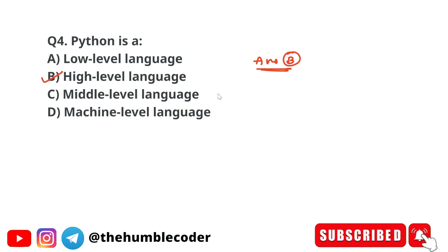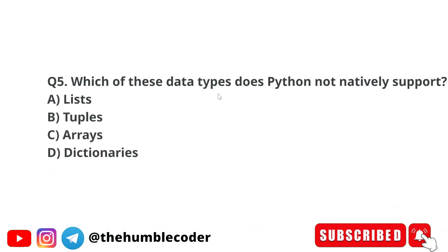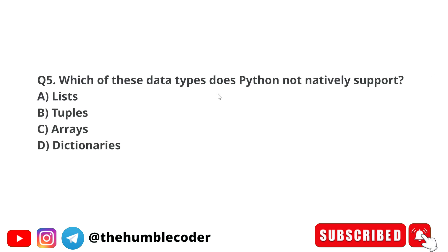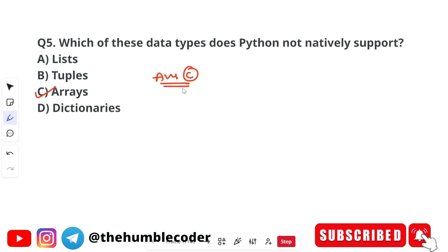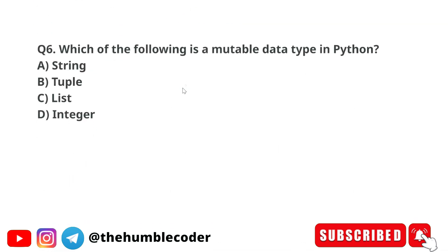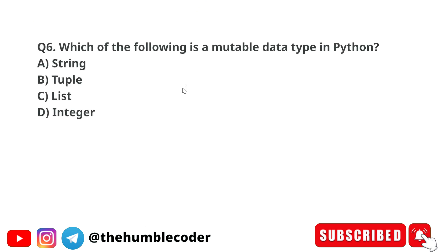Next question: which data type does Python not natively support? The options are lists, tuples, arrays, and dictionaries. The correct answer is option C, which is arrays. Arrays are not built into Python and require modules like the array module or numpy.